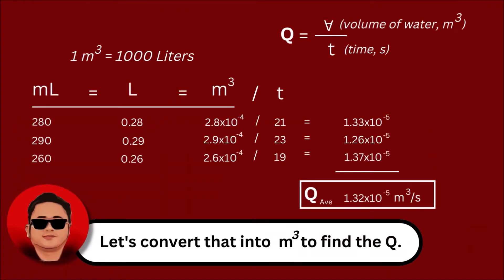Since the volume we took from the graduated cylinder is in milliliters, convert it to liters by dividing by 1000. To convert it into cubic meters, divide it again by 1000. To find the volumetric flow rate, divide it by the time. Calculate the three values and get the average.